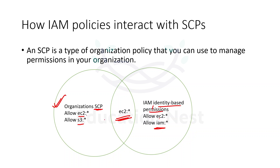So over here you can see that the intersection is EC2 — the identity-based policy is also allowing EC2 and the SCP is also allowing EC2, so that's why we have the EC2 allowance. This is what happens when we have the SCPs applied. Now let us say that on the organizational SCP, I am also allowing RDS, but it is not being allowed in the identity-based policy. So RDS will also not be part of the final allowance because it is not intersecting between both.